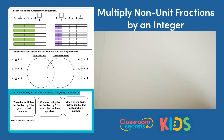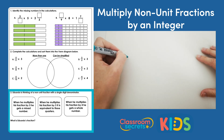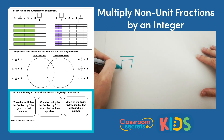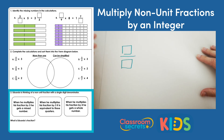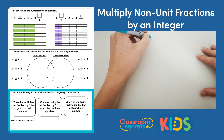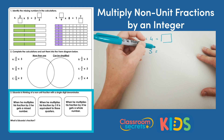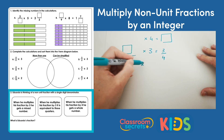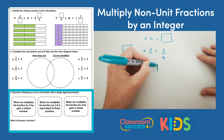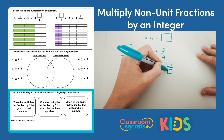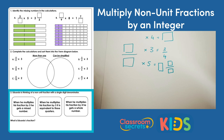Question 3: Eduardo is thinking of a non-unit fraction with a single digit denominator. When he multiplies his fraction by 5 he gets a mixed number. When he multiplies his fraction by 3 it is equivalent to 3 quarters. When he multiplies his fraction by 4 he gets a whole number. We're looking for a non-unit fraction with a single digit denominator, meaning the numerator is greater than 1. The way to solve this problem is by trial and error, choosing fractions that you think may work.